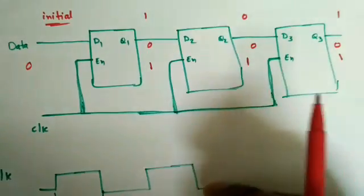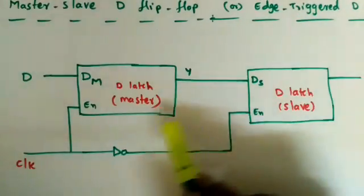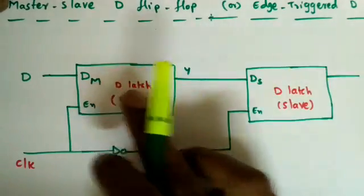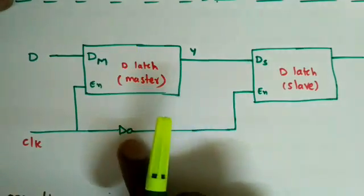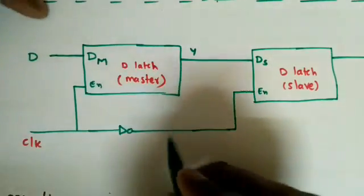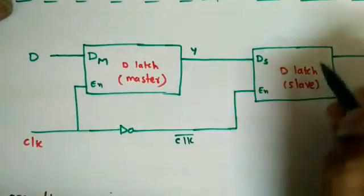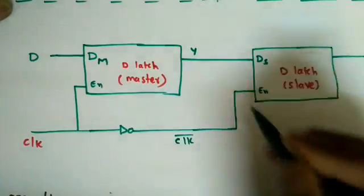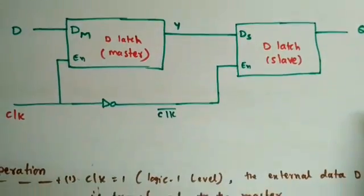To avoid this problem we use the master-slave D flip-flop, also called edge-triggered D flip-flop. The block diagram is similar to the master-slave JK flip-flop discussed in the previous lecture. It contains two latches — master and slave. The master works with the clock directly as a positive level-triggered input, and the slave receives the complement of the clock. So at any time only one latch will work, removing the uncertainty from the simple single latch.